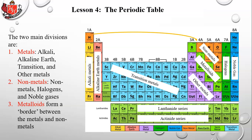Metalloids have properties of both metals and non-metals. They are used in semiconductors found in computers, such as silicon and germanium.